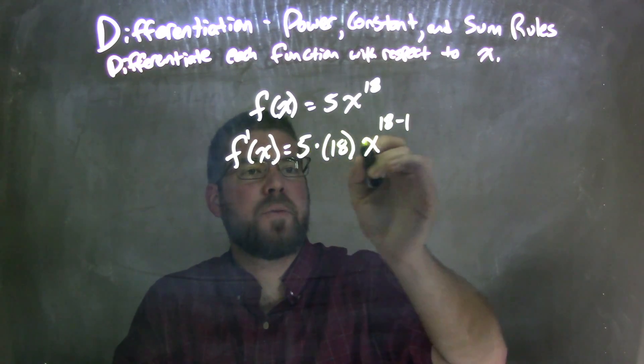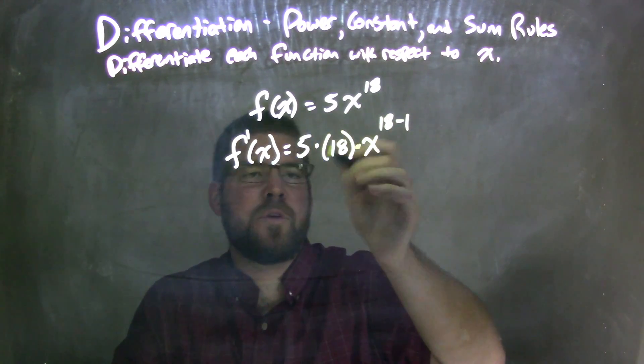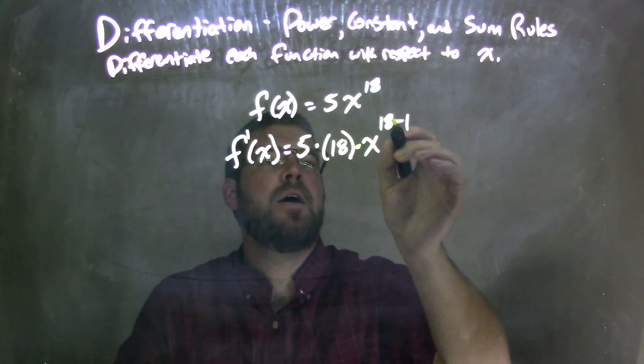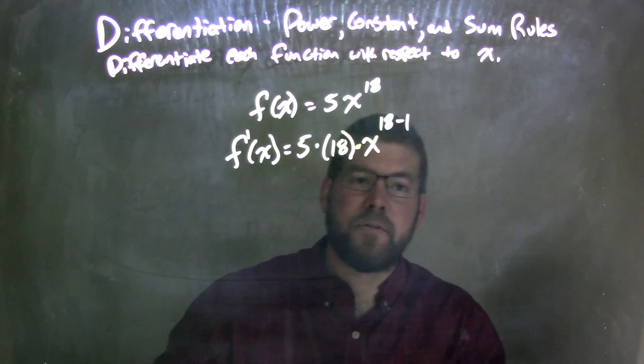And then, when it's all multiplication, you can put it out front, in front of 5. It doesn't really matter. And then we have the 18 minus, we take that power, subtract 1 from it.